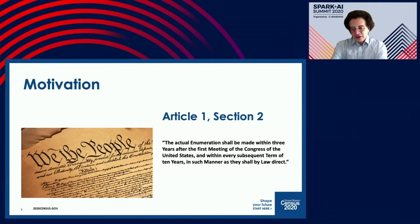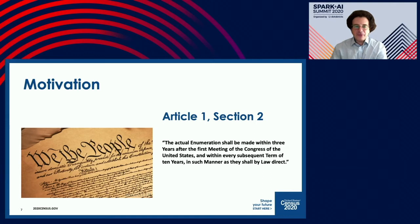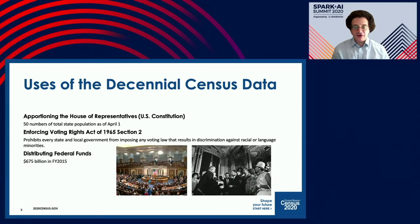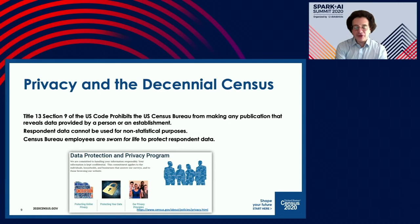The Census is called for in the Constitution. Article 1, Section 2 calls for Congress to make an actual enumeration of the people of the United States every 10 years. That information is used to apportion the House of Representatives, to distribute $675 billion in 2015 (and presumably more today) in federal funds, and it's used by the Department of Justice for enforcing the Voting Rights Act of 1965. The decennial census is also used to calibrate the American Community Survey and many other projects — it is the reference frame.